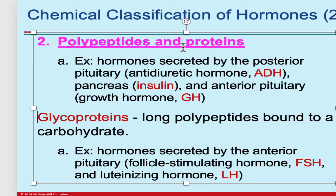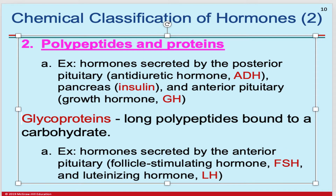Moving on to the next category: polypeptides or proteins. Polypeptides are normally any string of amino acids about 10 units long; proteins will be longer than that. There's a whole host to choose from and we'll encounter them as we go through the two video lectures. For now, just remember ADH, secreted by the posterior pituitary, which regulates potassium levels and water levels, the pancreas in terms of insulin production, and the anterior pituitary's growth hormone as a great example.